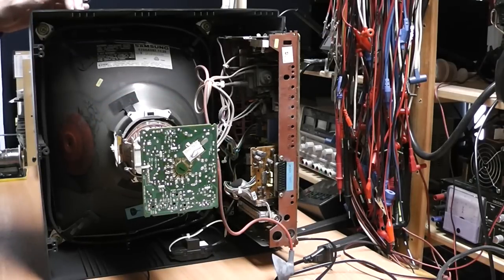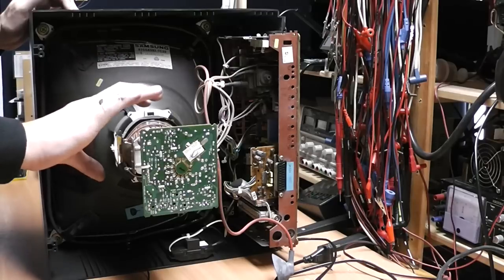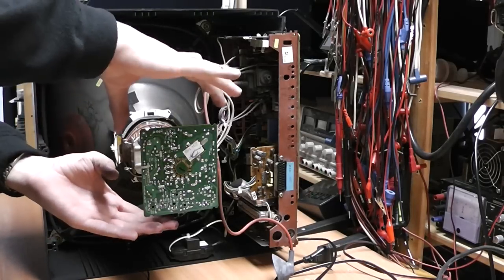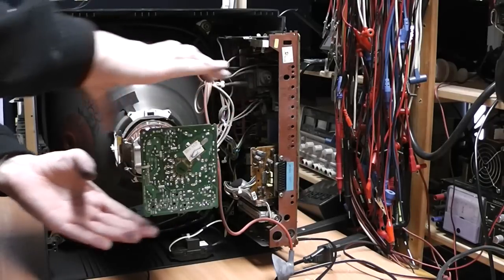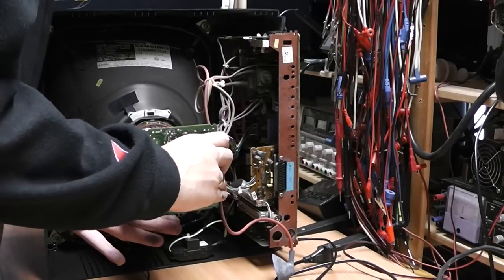Now the second step will be to remove the PCB that connects to the tube itself. The cathode ray tube basically slides right into a socket on the PCB and can be pulled straight off. So we are going to do that.